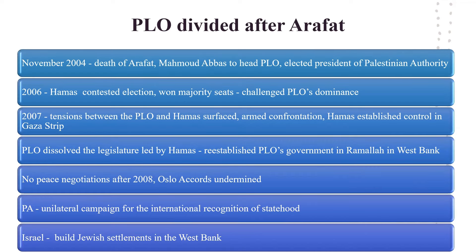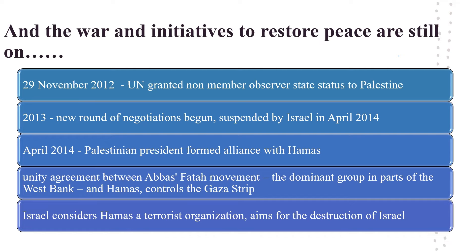No peace negotiations after 2008 undermined the Oslo Accords that had legitimized the PLO within the West Bank and Gaza Strip. The Palestinian Authority continued with a unilateral campaign for international recognition of statehood. Meanwhile, Israel continued to build Jewish settlements in the West Bank. On 29th November 2012, the UN granted non-member observer status to Palestine, after which a new round of negotiations began in 2013. Negotiations were suspended by Israel in April 2014 when Palestinian President Mahmoud Abbas formed an alliance with Hamas. The unity agreement was reached between Abbas's Fatah movement, the dominant group in the PLO which governs part of the West Bank, and Hamas, which controls the Gaza Strip. Israel considers Hamas a terrorist organization that aims for the destruction of Israel.